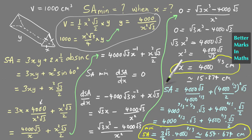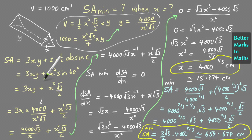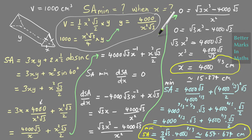In this question you had two variables in the surface area expression, x and y. It's easier to get y in terms of x and substitute, rather than the other way around. In this type of problem — finding a maximum or minimum using calculus — look for which variable appears only once and express it in terms of the other using the given constraint, which here was the fixed volume of 1000.